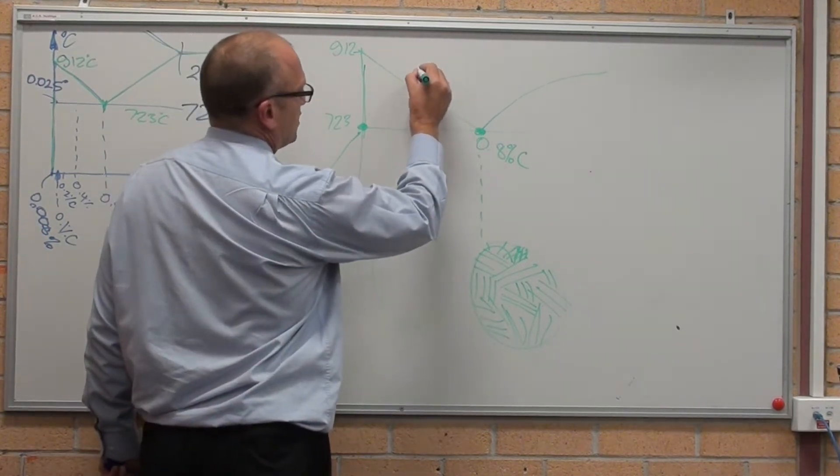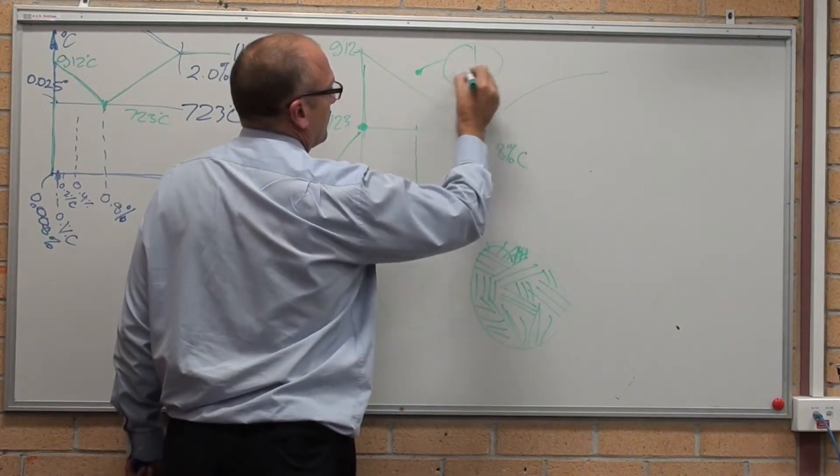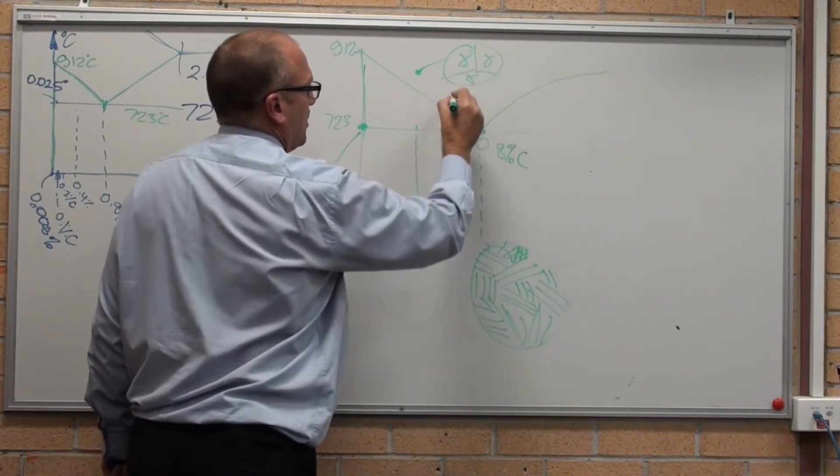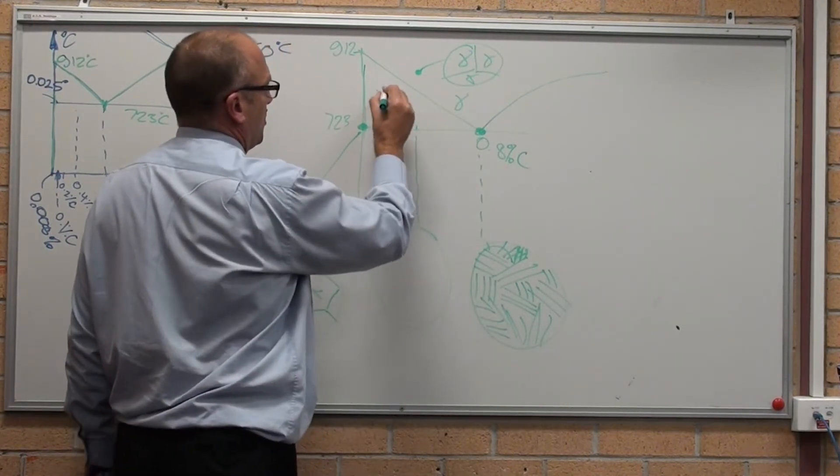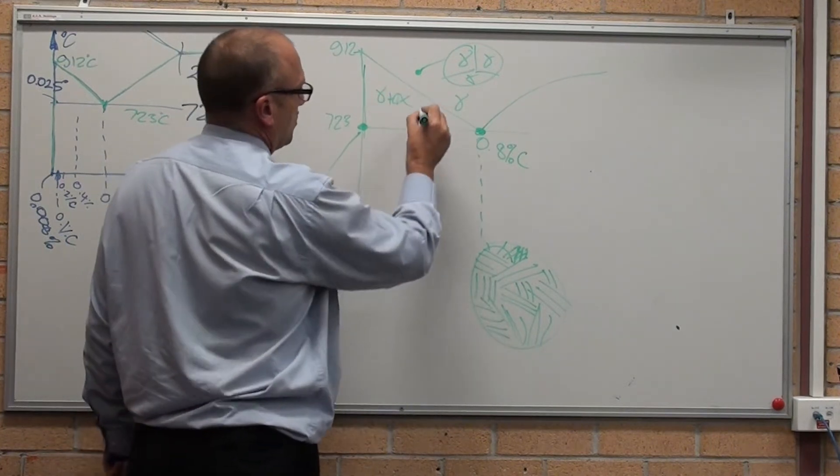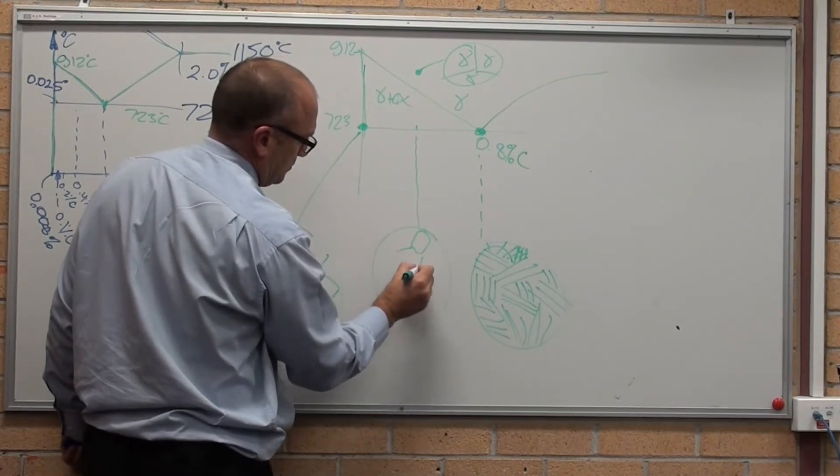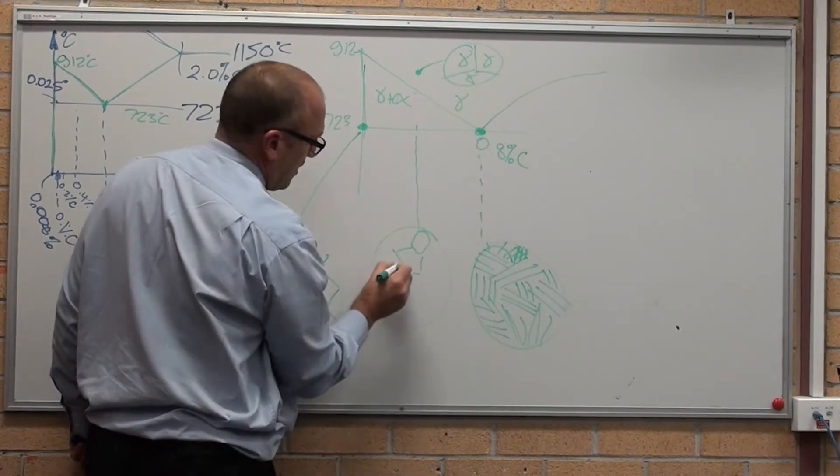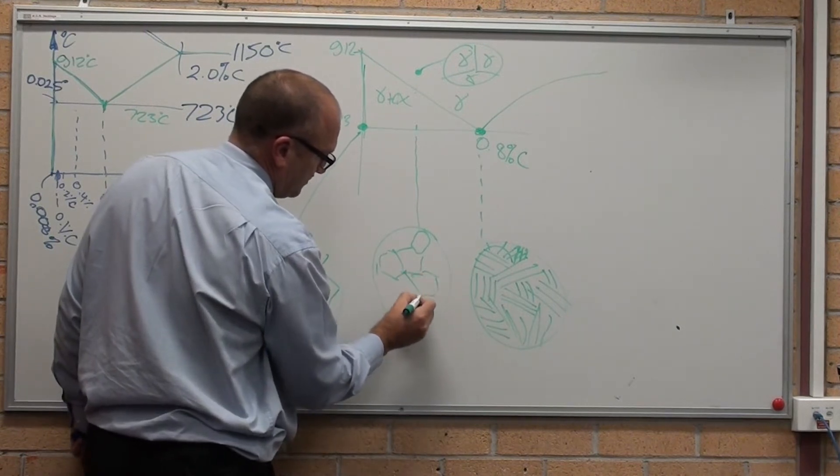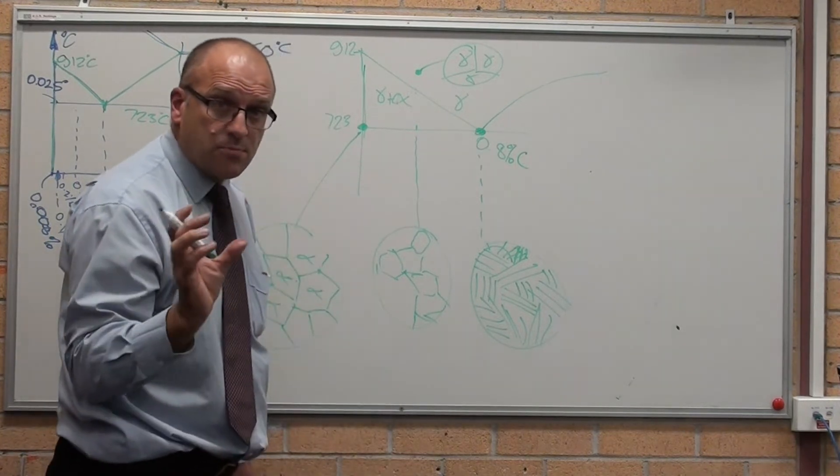What actually happens as it's cooling down - up here we've just got the austenite phase range. Here we've got austenite plus ferrite. So what happens as it's cooling down, the ferrite forms on the grain boundaries of the austenite as it's cooling. Because as we've just spoken about, phases nucleate on the high energy areas.